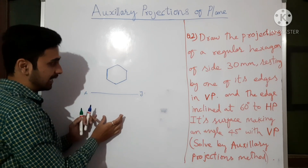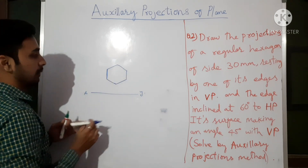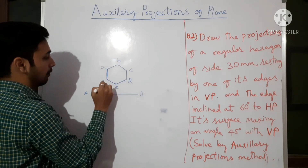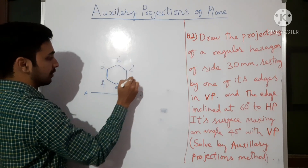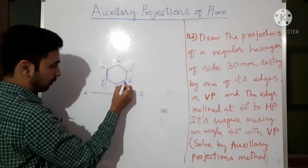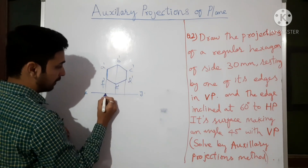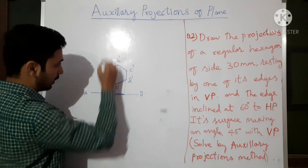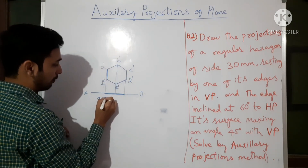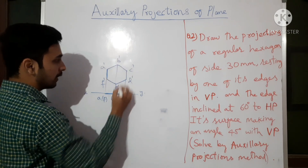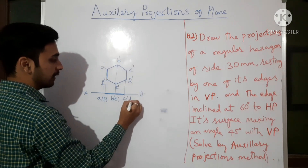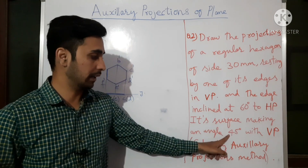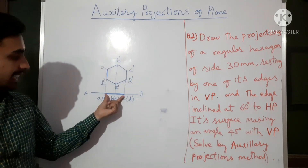Now let us give names A, B, C, D, E, F for the front view — dashes will come. Project all the points for the top view. Looking from top: first comes A, then F, B, then E, C, then D.